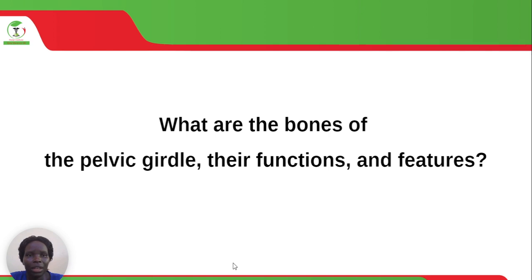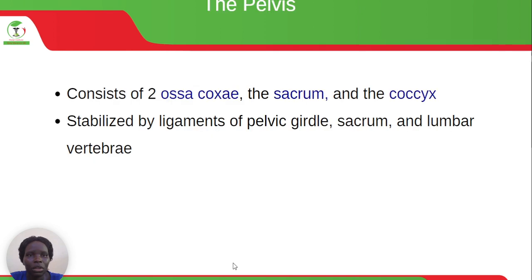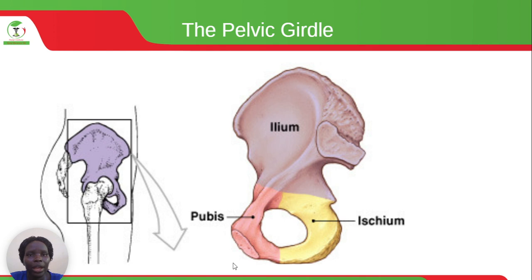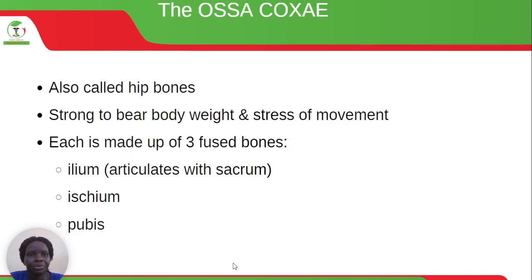The pelvic girdle consists of two os coxae, the sacrum and the coccyx, and is stabilized by ligaments of the pelvic girdle, sacrum and the lumbar vertebrae. The os coxae, also called the hip bones, are strong to bear body weight and stress of movement. Each is made up of three fused bones: the ilium, ischium and the pubis.